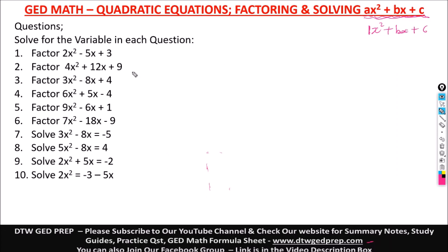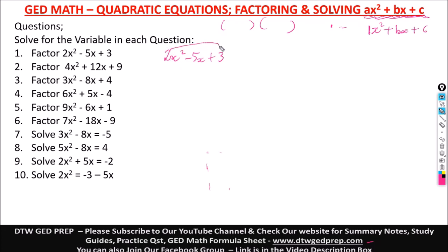Now let's go to number one. It says 2x squared minus 5x plus 3 — we should factor. Factor means we're going to have two values in two parentheses. The first thing you do is multiply 2 times 3. Before you watch this video, make sure you've watched the prerequisite video.